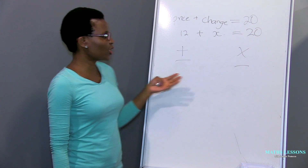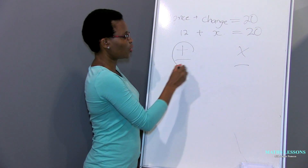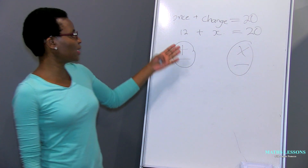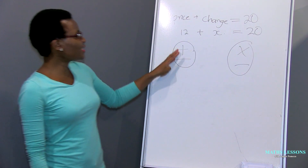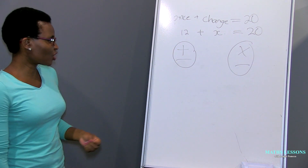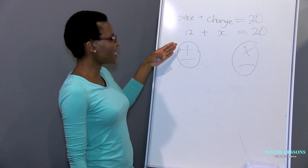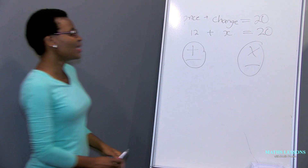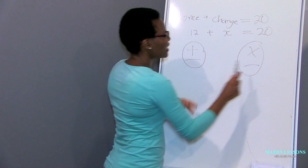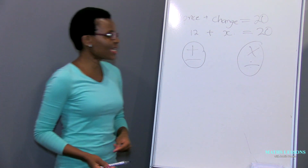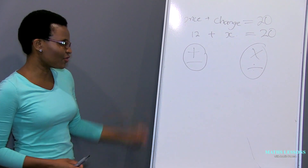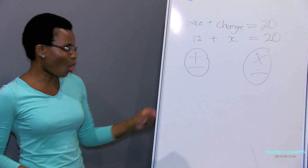I call addition and subtraction 'twins', and multiplication and division 'twins'. The first reason is that most of the rules that apply in addition also apply in subtraction. Same here — most of the rules that apply in multiplication also apply in division. I said most, not all, because in some cases the rules are different.